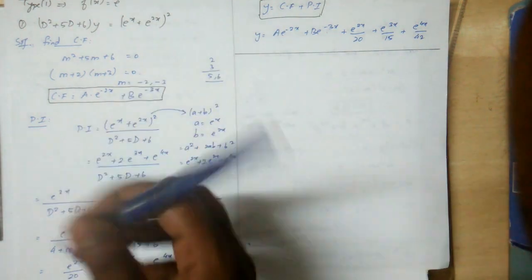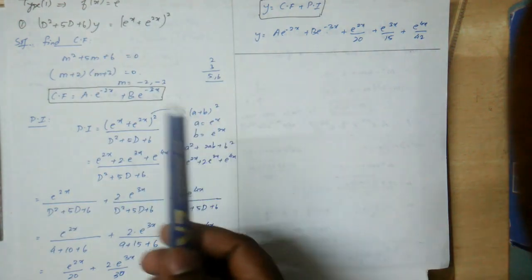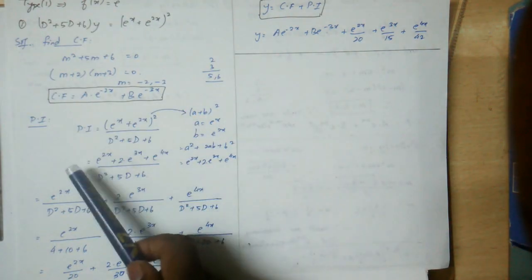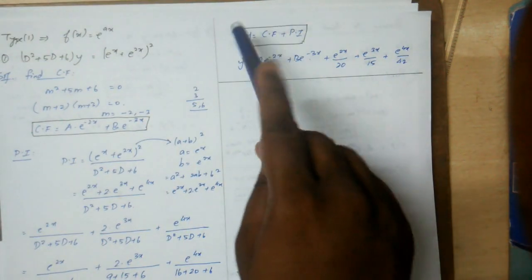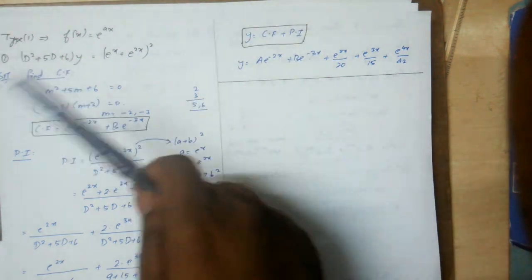Now for the particular integral (PI). In some cases, one particular integral is zero, so y = CF + PI. Since PI can be zero in some cases, we need to check.